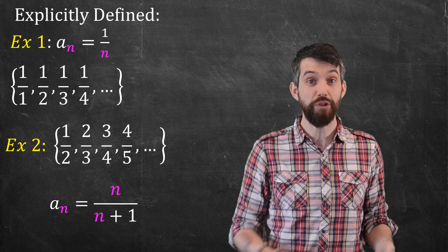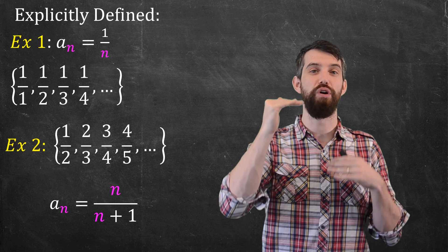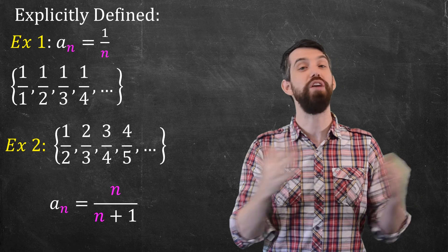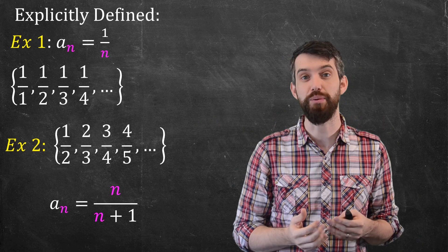So indeed, in general, we will say that a_n is n over n plus 1. You give me any natural n, and we can figure out what the term in the sequence is going to be.